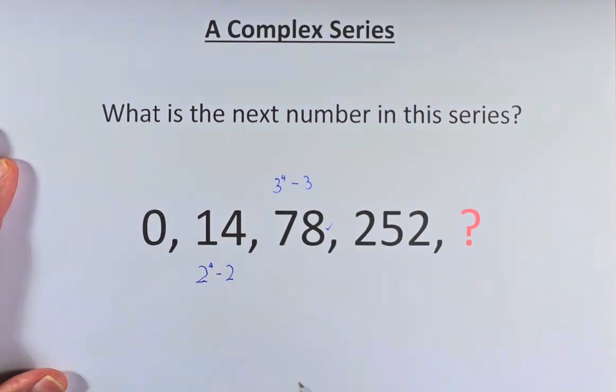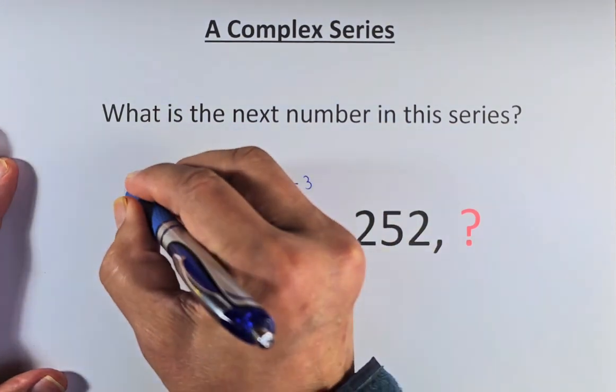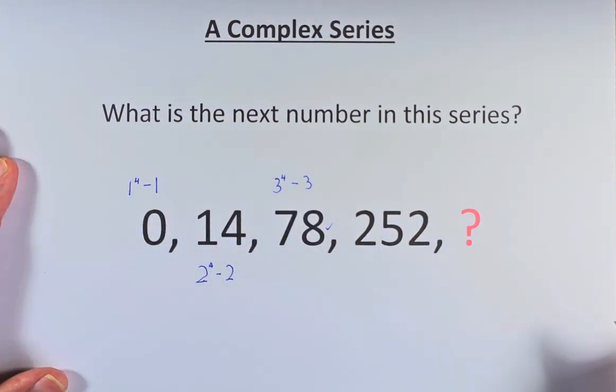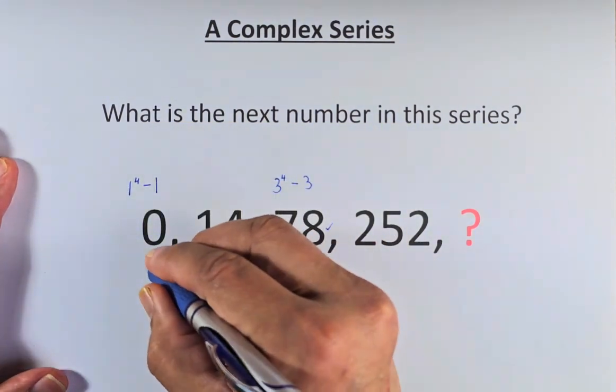So now you know the pattern. We'll go back to 0. 0 is the same as 1 to the power of 4 minus 1. 1 to the power of 4 is still 1 minus 1. That will give us 0.